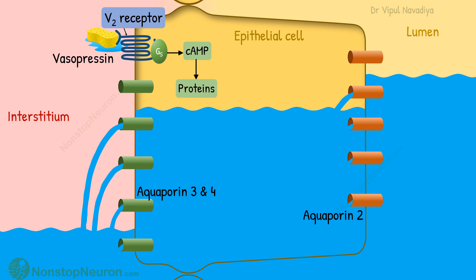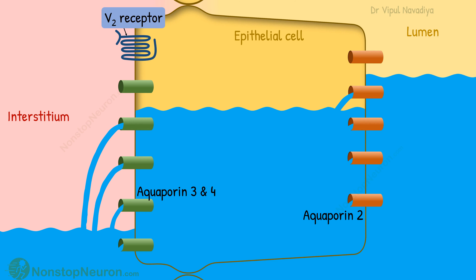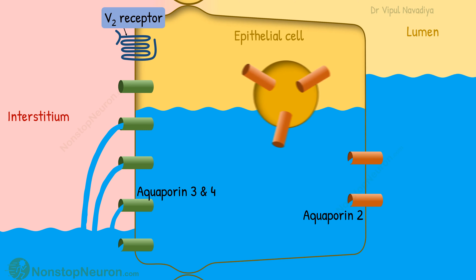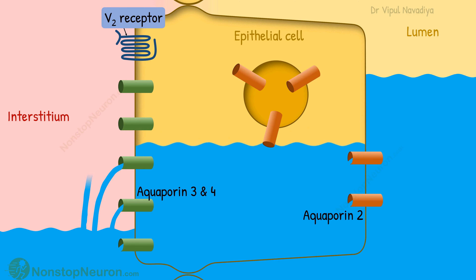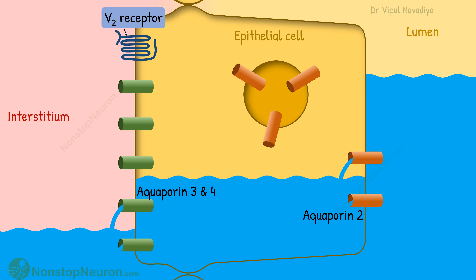In this way, more water is reabsorbed until needed. Once we have enough water, the vasopressin level decreases and the process is reversed. Aquaporins come back inside the cell, and water reabsorption reduces.